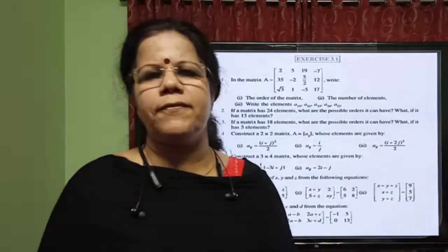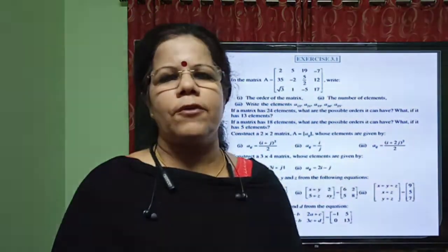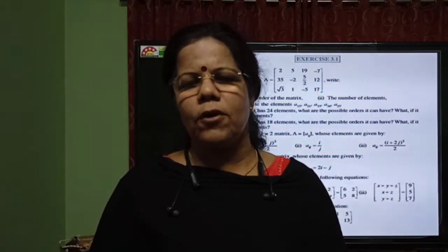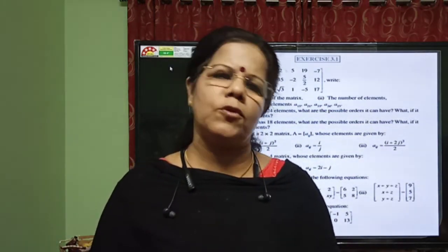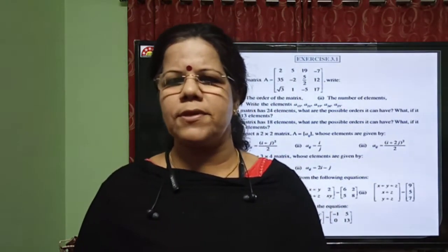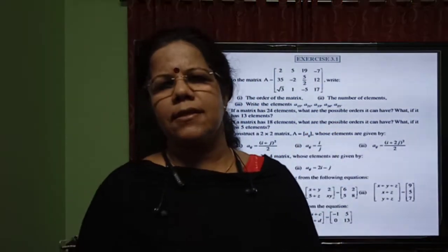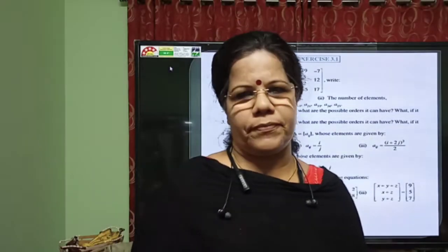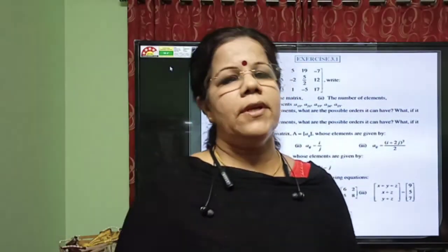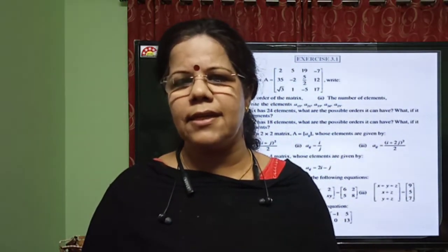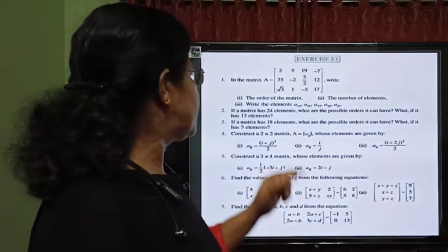The second question asks: if a matrix has 24 elements, what are the possible orders? For 24 elements, the factor pairs are: 1 and 24 giving orders 1×24 and 24×1; 2 and 12 giving 2×12 and 12×2; 3 and 8 giving 3×8 and 8×3; and 4 and 6 giving 4×6 and 6×4 — so there are 8 possible orders. If it has 13 elements, since 13 is a prime number, there are only 2 possibilities: 1×13 and 13×1.